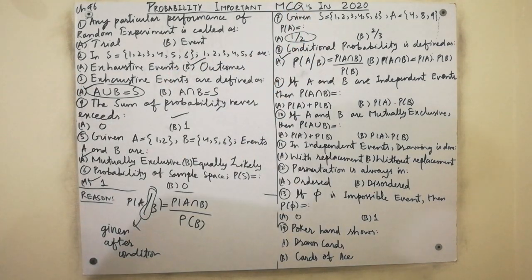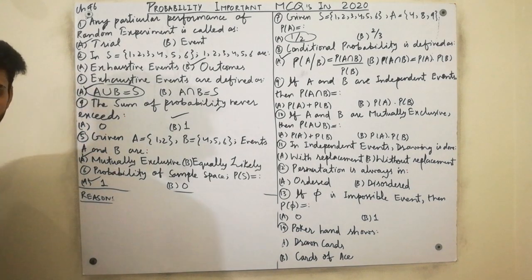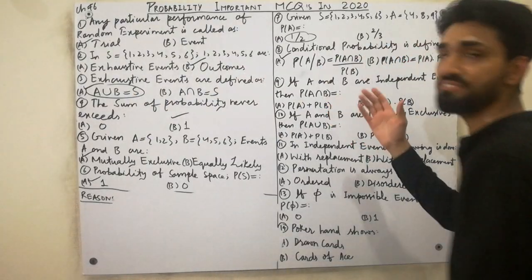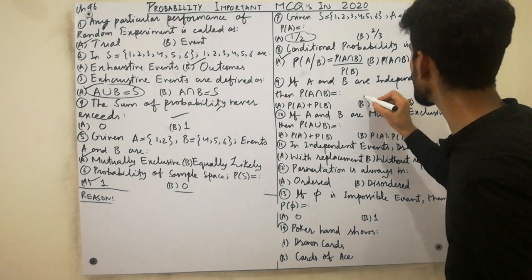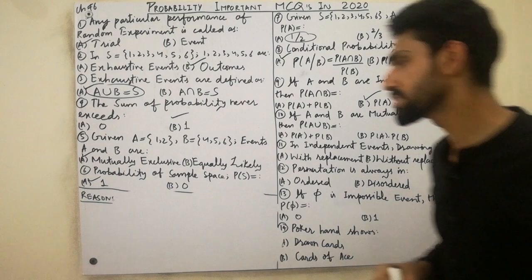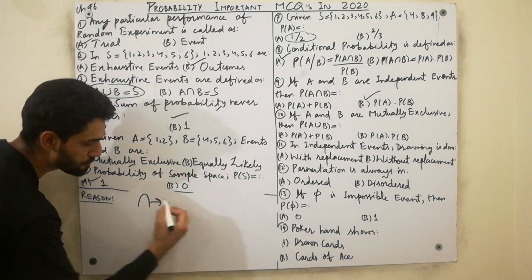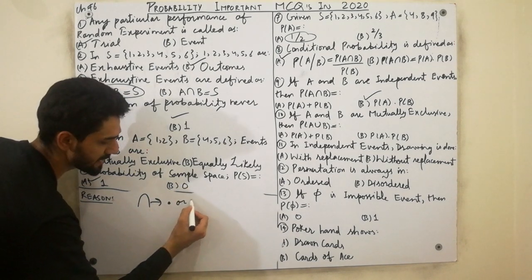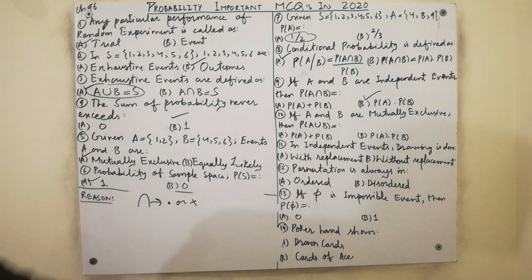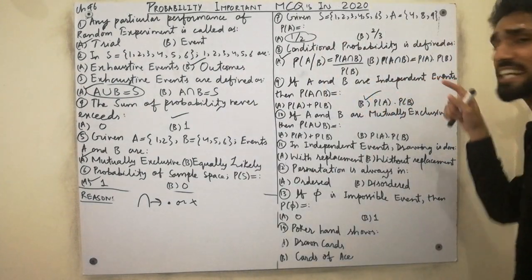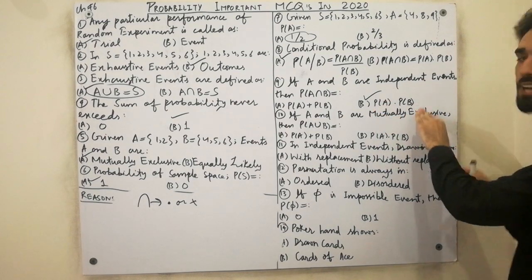MCQ nine: if A and B are independent events, then P(A intersection B) always equals P(A) multiplied by P(B). Must remember: intersection shows a dot or product. So for independent events, P(A intersection B) = P(A) × P(B). That is the key trick and secret for this MCQ.